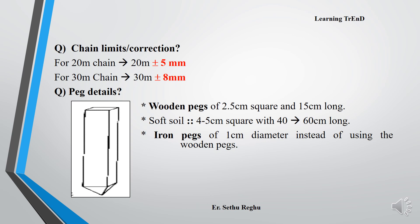What is a peg? Pegs are also called station marks and are used to mark instrument stations. Wooden pegs are typically 2.5 cm square and 50 cm long. For soft soil, larger pegs of 4 to 5 cm square and 40 to 60 cm long are used. Iron pegs, one inch in diameter, are used when wooden pegs cannot be used.